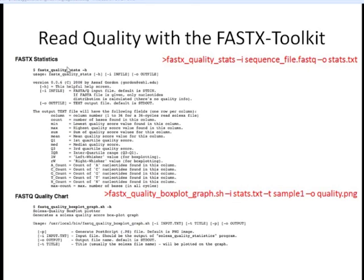The first program we want to use is the FASTX Quality Stats program. We can use the dash-H option to print out all available information. Basically, what we need to provide is an input file that's a FASTQ file and an output file where we want the statistics to be printed. Here is an example of how you would type this on the command line.